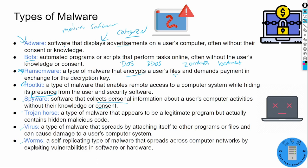A virus and a worm are similar, except worms can be self-replicating and spread without user interaction. The virus needs user interaction in order to propagate — someone has to click it, download it, and run it. A worm is self-propagating and self-replicating, and it will spread very quickly through your network because it doesn't require that interaction.